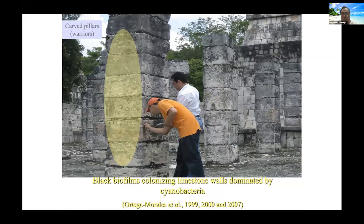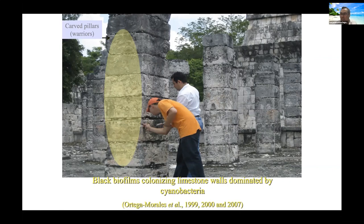These black biofilms colonizing limestone are mostly dominated by cyanobacteria. People have asked at conferences whether buildings will fall apart due to biological colonization — of course not — but you don't need excessive colonization to lose the integrity of a building. Here in yellow you can see a warrior carving over the surface. If biological colonization covers it and you can no longer see that iconic representation of the warrior, you are losing cultural heritage — which is not only related to tourism, but to our own identity as people.